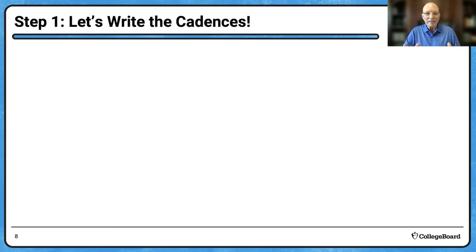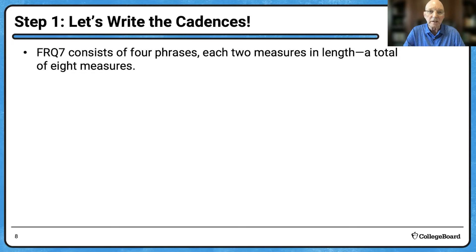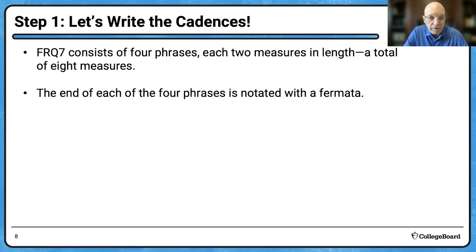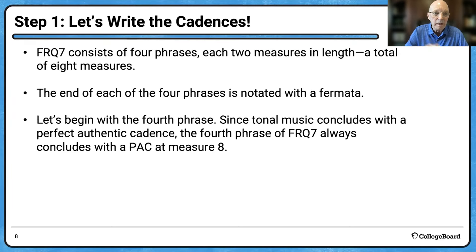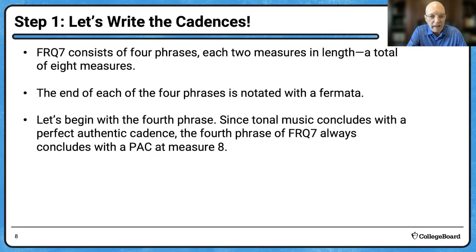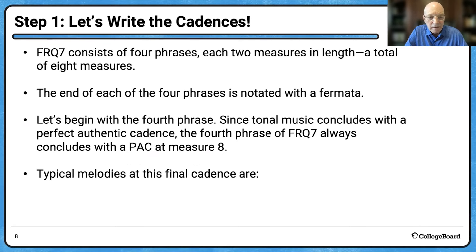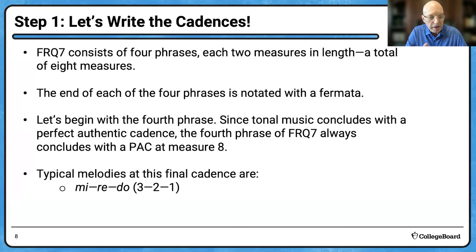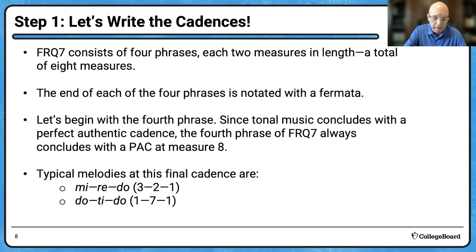Step one: let's write the cadences. Free response question seven consists of four phrases, each two measures in length, for a total of eight measures. The end of each of the four phrases is notated with a fermata. Let's begin with the fourth phrase. Since tonal music concludes with a perfect authentic cadence, the fourth phrase of free response question seven always ends with a PAC — a perfect authentic cadence — at measure eight. That's a requirement. Typical melodies at this final cadence are mi-re-do (scale degrees 3-2-1) or do-ti-do (1-7-1).